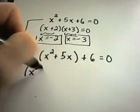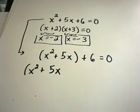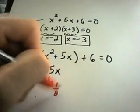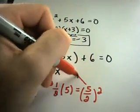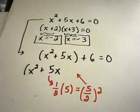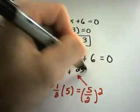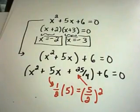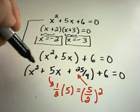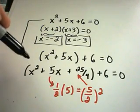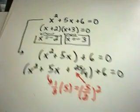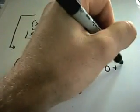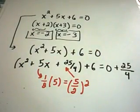You take half of the middle term — half of 5 is 5/2. So you take one half of the number in front of the x, which gives us 5/2, and then you square that: 5/2 squared gives 25/4, and that's what you plug back inside the equation. Our plus 6 is still there. You have to be careful: if you expand the left side, there's an extra 25/4 that wasn't there before, so since we added 25/4 to the left side, we have to add it to the right side as well.